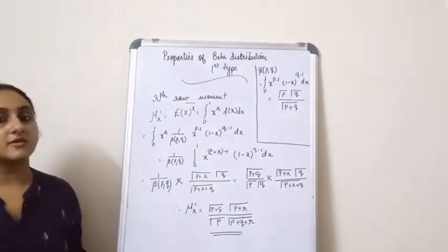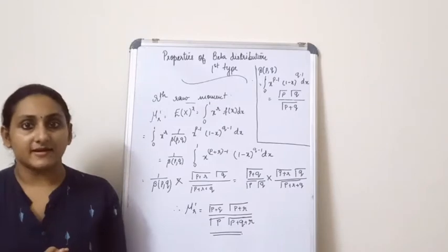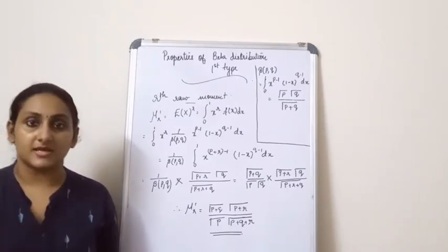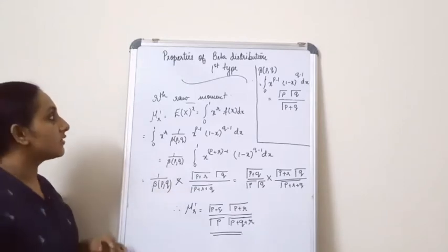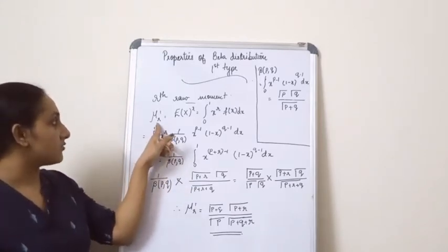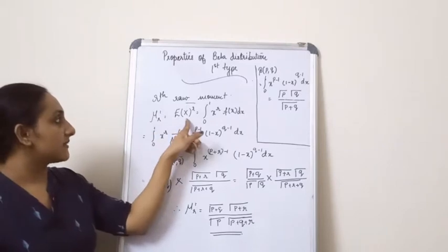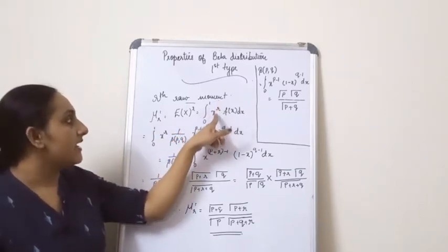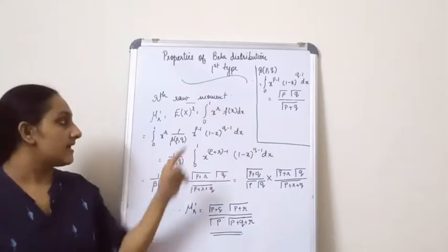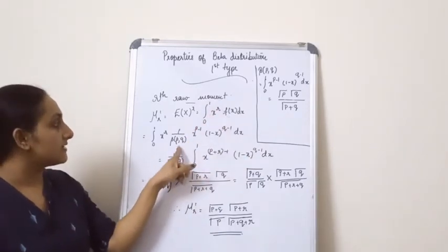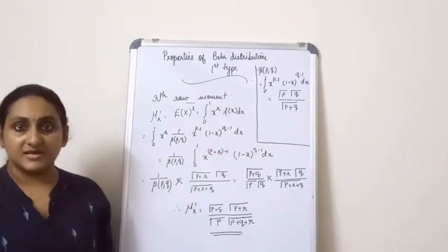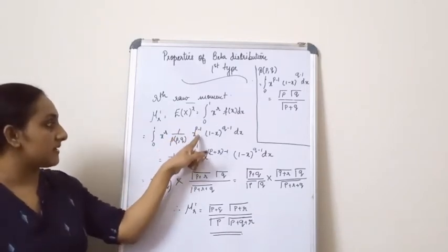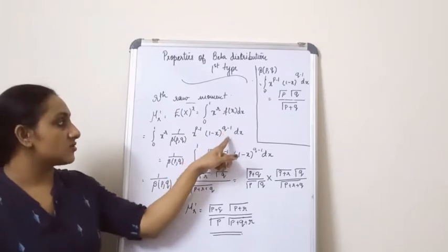Now we will move on to the r-th raw moment. First we will find the r-th raw moment, and from that we will find the mean and variance. The r-th raw moment mu_r' equals the expectation of x^r, which equals the integral from 0 to 1 of x^r * f(x) dx. Substituting the density function of the Beta distribution of the first kind, that is (1/Beta(p,q)) * x^(p-1) * (1-x)^(q-1) dx.